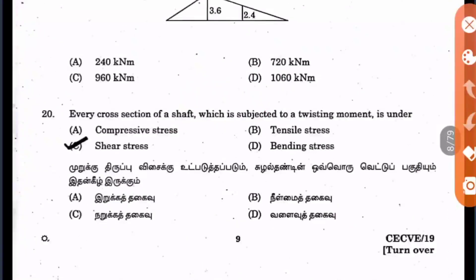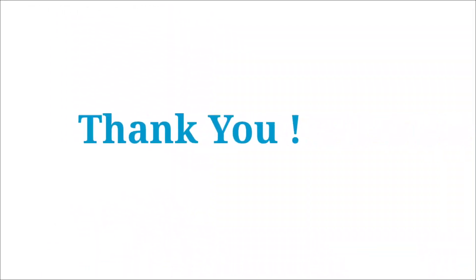Question 20: Every cross section of a shaft subjected to a twisting moment is under what? When the term twisting moment comes, shear stress occurs — shear stress is the answer. Thank you and keep watching.